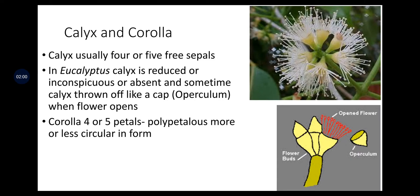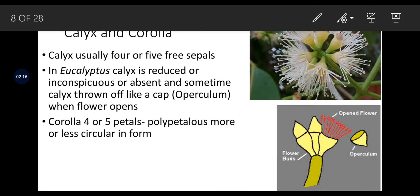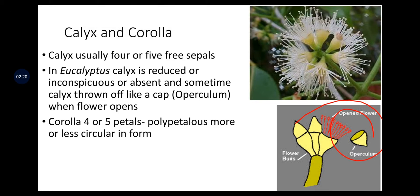Calyx: usually 4 to 5 free sepals. In Eucalyptus, the calyx is reduced, inconspicuous, or absent, and sometimes the calyx throws off like a cap — that is, an operculum — when the flower opens. Here you can find the cap-like structure; this is the operculum. Corolla: 4 to 5 petals, polypetalous, more or less circular in form.